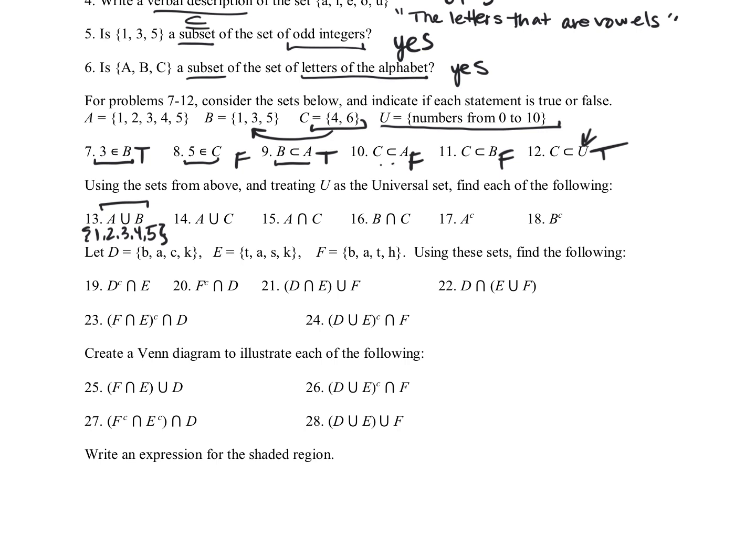A union C, again, all the elements in A or in C. So we're going to have the one, two, three, four, five. And we look at C. C contains four and six. So four is already in there, but we're going to have to add in the six to make sure we include all of them.